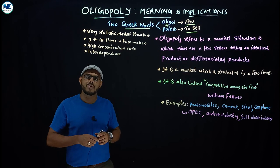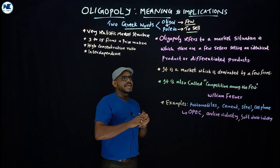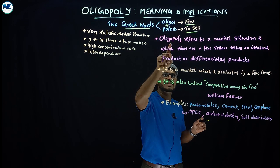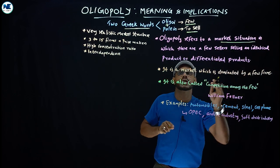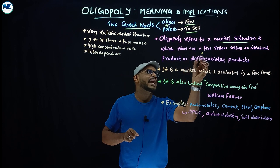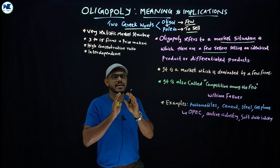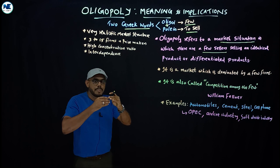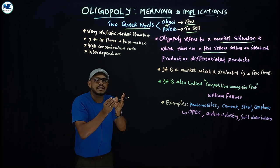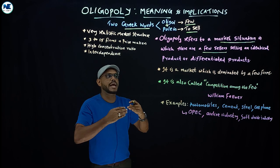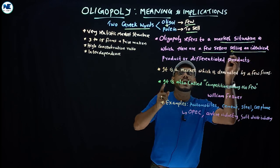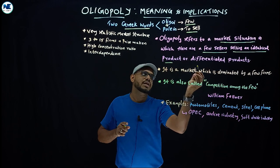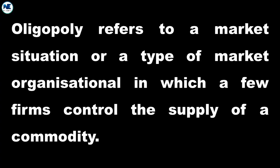We can define oligopoly in a simple way. Oligopoly refers to a market situation in which there are a few sellers—that is the keyword. Number of firms are limited, a few firms or a few sellers selling an identical product or differentiated products.